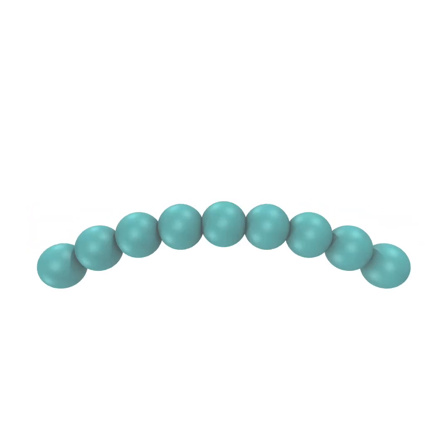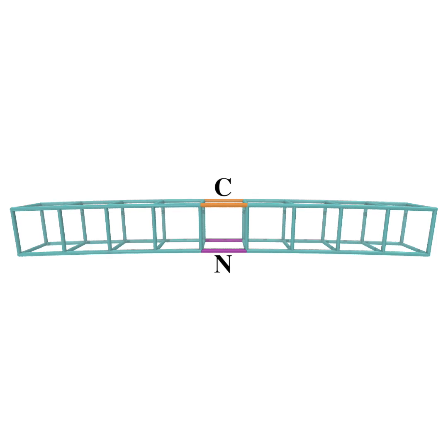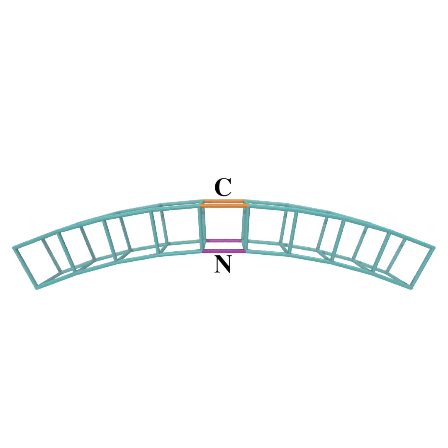We assume the filament bends without twisting. To prevent twisting, we represent each subunit as a cube and the filament as a chain of cubes. To implement filament bending, the relaxed length of springs on the C-terminal side and N-terminal side are increased and decreased respectively.